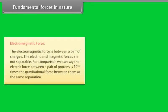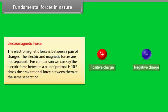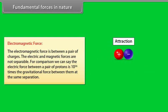The electromagnetic force is between a pair of charges. The electric and magnetic forces are not separable. For comparison, we can say the electric force between a pair of protons is 10 raised to the power 36 times the gravitational force between them at the same separation.